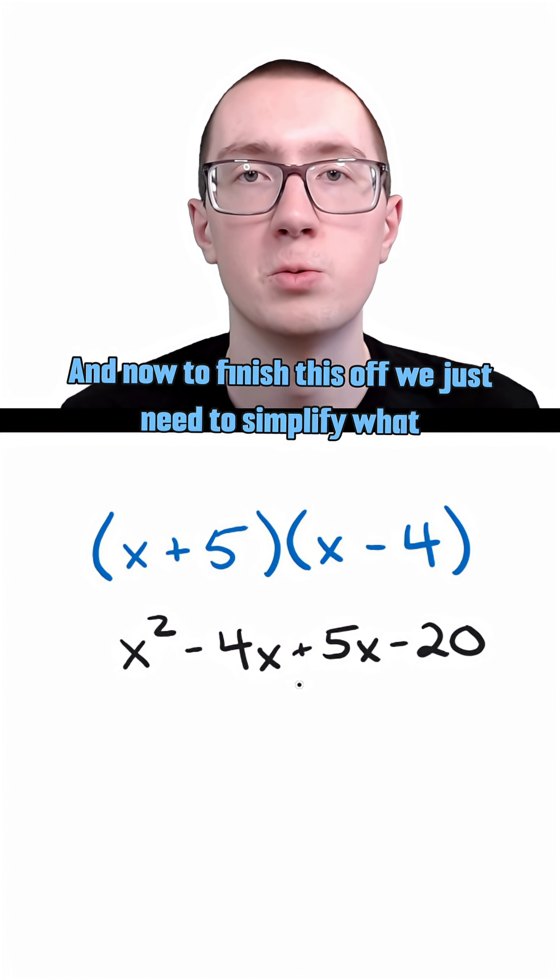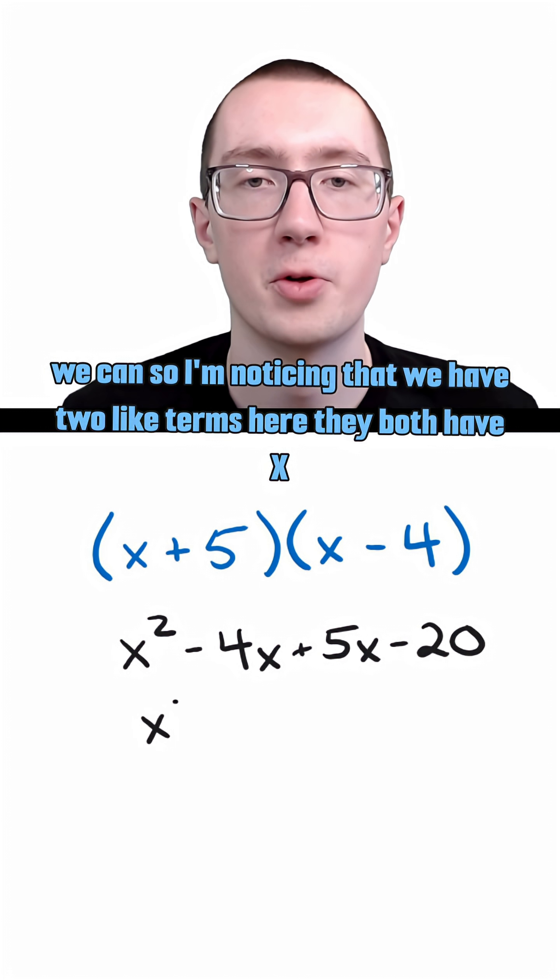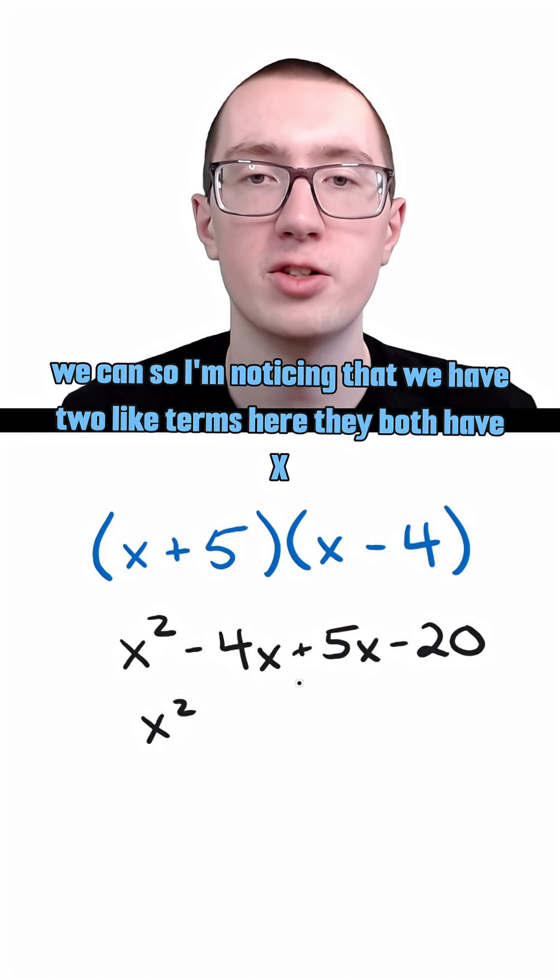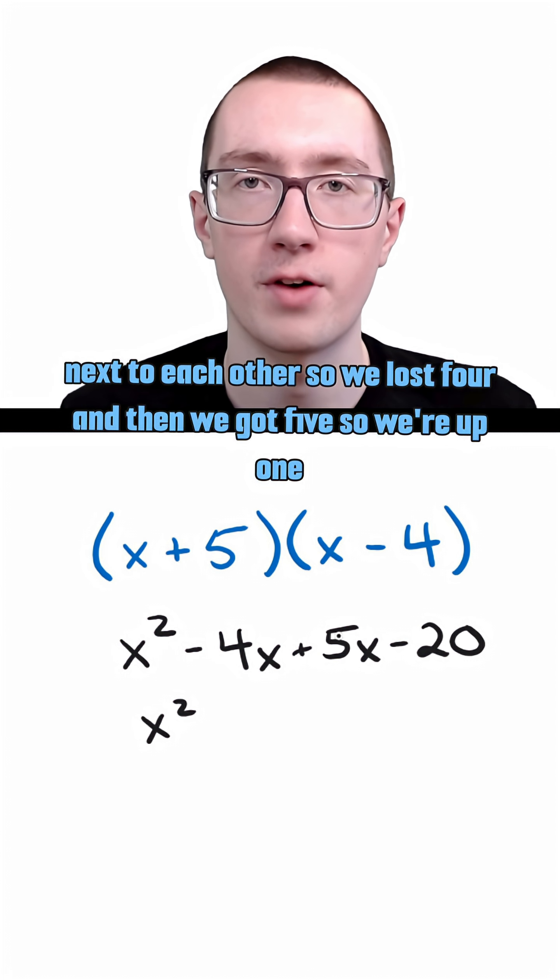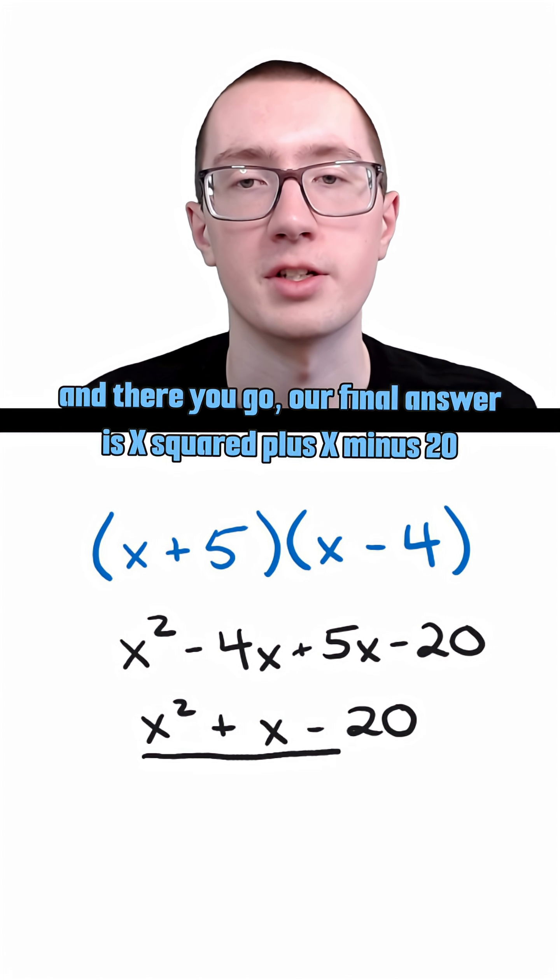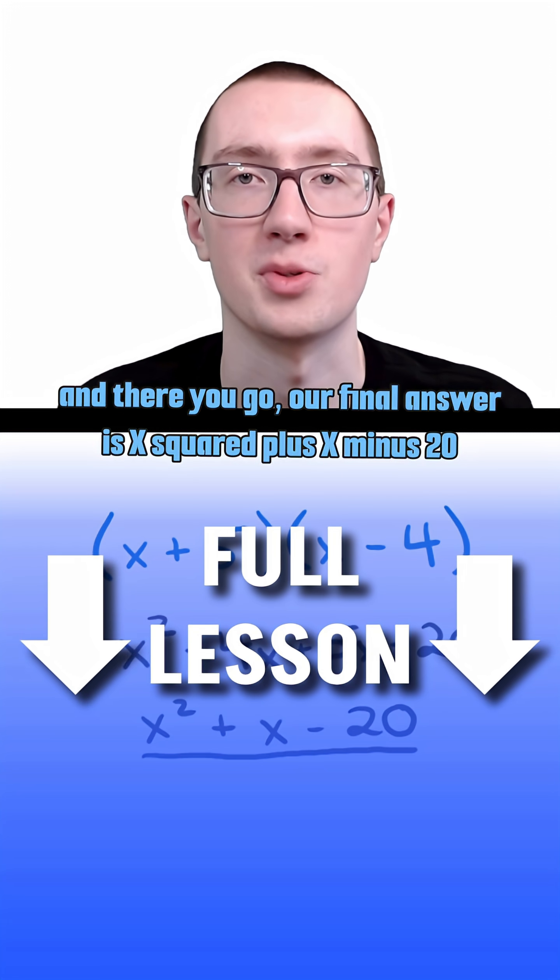And now to finish this off, we just need to simplify what we can. So I'm noticing that we have two like terms here, they both have x next to each other. So we lost four and then got five, so we're up one. And there you go. Our final answer is x squared plus x minus twenty.